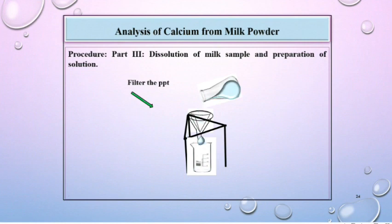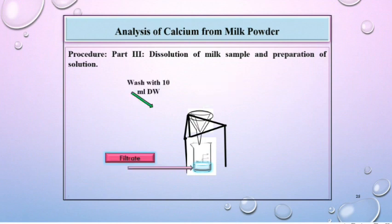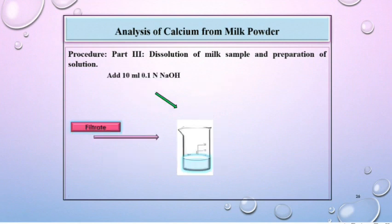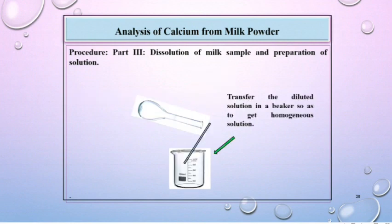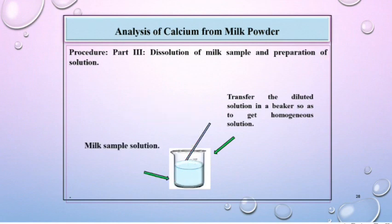Now filter the solution through Whatman 41 filter paper, then wash the filter paper with 10 ml distilled water. Now add 10 ml of 0.1 normal NaOH solution to this filtrate, then dilute this solution in a volumetric flask using distilled water. Transfer the diluted solution into a beaker to get a homogeneous solution. This is the solution of the milk sample.